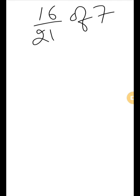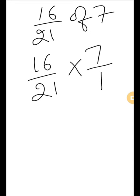Now see the next question: 16/21 of 7. First, replace 'of' with the multiply sign: 16/21 multiply 7. Write the denominator as 1. Now cross-check.